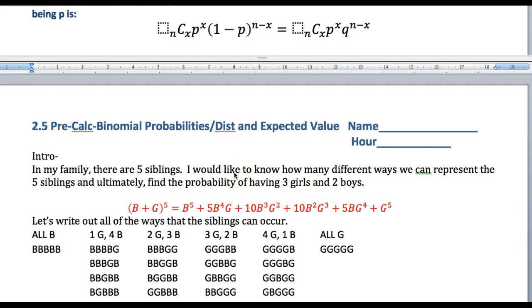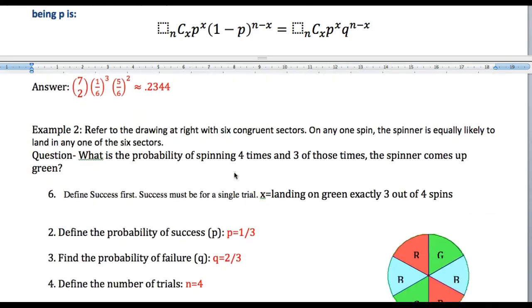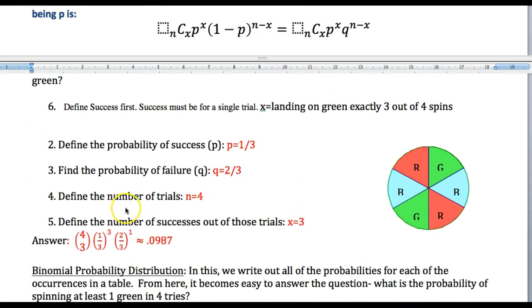So we're going to put that into a chart. If we look at the example from last time, we had a spinner and we set up this probability model. And so we did four choose three because we wanted three successes out of four trials.